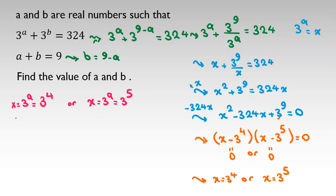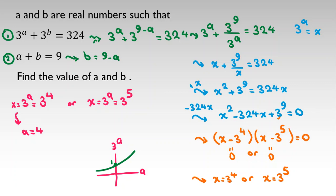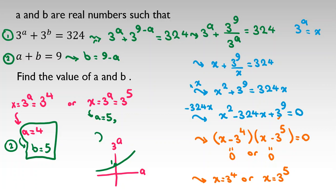From the first case, a equals 4 — because if you look at the graph of 3 to the a, it is strictly increasing, so if 3 to the a equals 3 to the 4, the powers must be equal, giving a equals 4. Then by the second equation b equals 5. For the second case, a equals 5 and b equals 4.